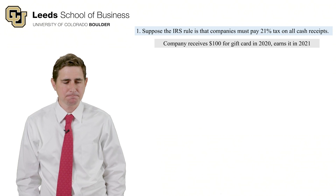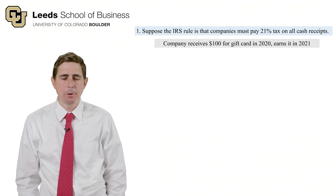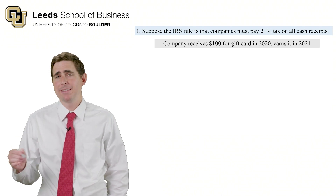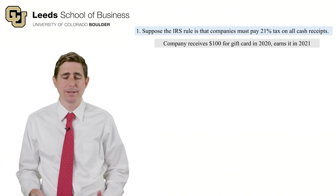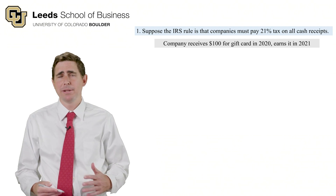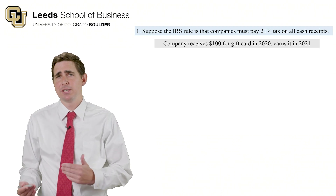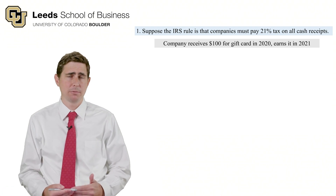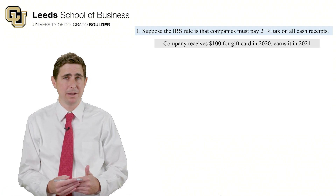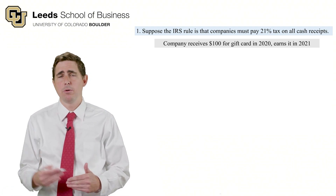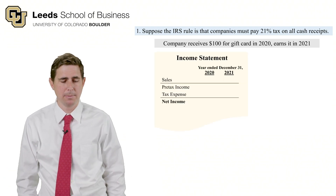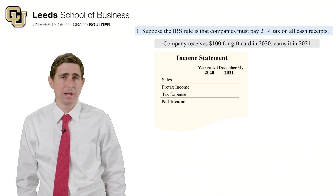Now let's go through the opposite example with a deferred tax asset. Suppose the company receives $100 for selling a gift card this year but won't actually make the sale until next year — like Starbucks selling a $100 gift card that the customer doesn't redeem for coffee until next year. We receive cash and have to pay tax in 2020, but we don't earn the revenue until 2021.